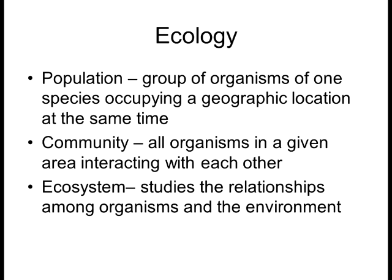A population is a group of the same species occupying the same geographical area. That doesn't mean that's the end-all of all of that species — there can be multiple populations of a species spread out throughout the world. The more spread out a species is, the greater its chances of survival. Some species have very restricted populations because they can only survive where the temperature, precipitation, and ecosystem dynamics are right. When these organisms experience a change in their environment, they can very easily go extinct.